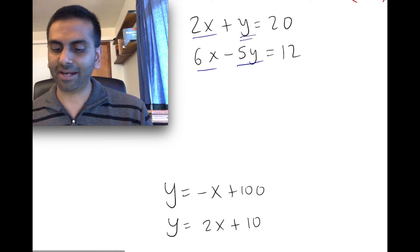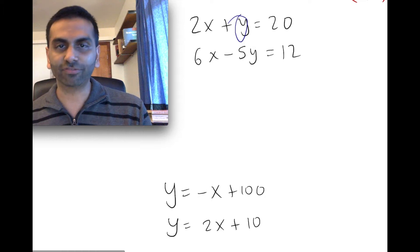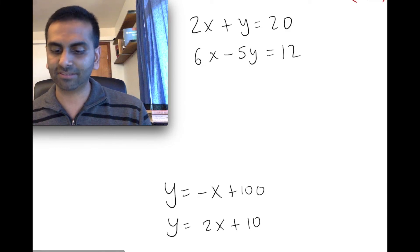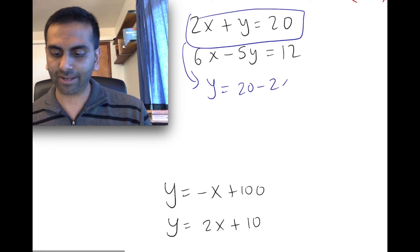So strategically, I could solve for this y just by subtracting out 2x from both sides. That's what I'm going to do. I'm going to strategically pick this guy, subtract 2x from both sides, and when I do that, this becomes subtracting the 2x, y equals 20 - 2x.